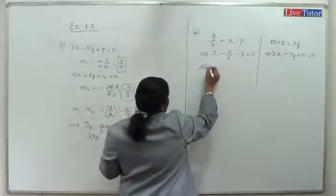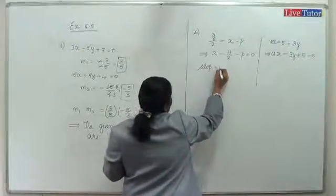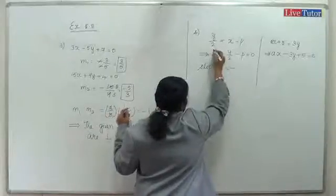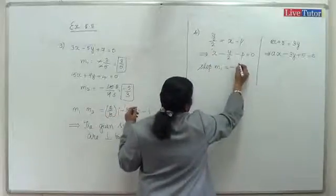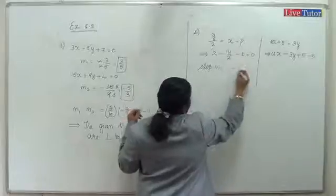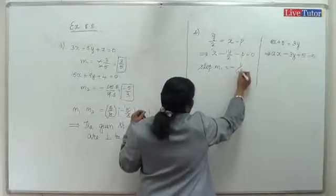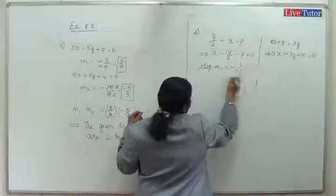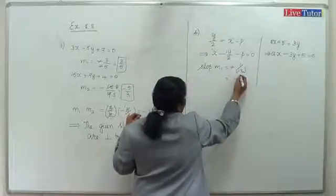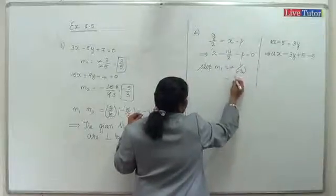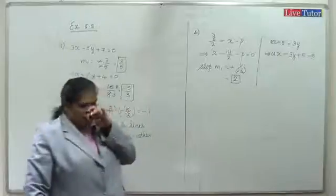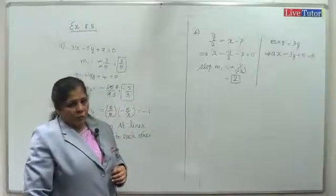Slope m1 from the first equation: coefficient of x is 1, coefficient of y is -1/2, so slope m1 equals minus 1 divided by (-1/2), which gives 2. Slope m1 equals 2.